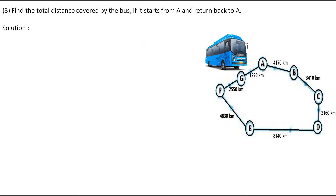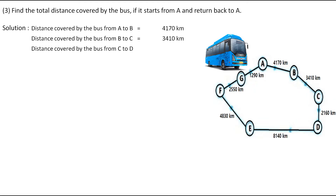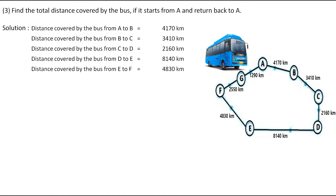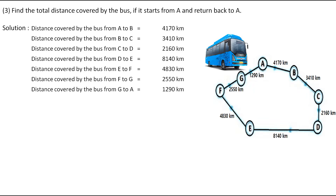The next question is: find the total distance covered by the bus if it starts from A and returns back to A — visiting all destinations and coming back. So we add up all the distances: A to B is 4170 km, B to C is 3410, C to D is 2160, D to E is 8140, E to F is 4830, F to G is 2550, and G to A is 1290 km. The total distance covered by the bus is 26,550 km.